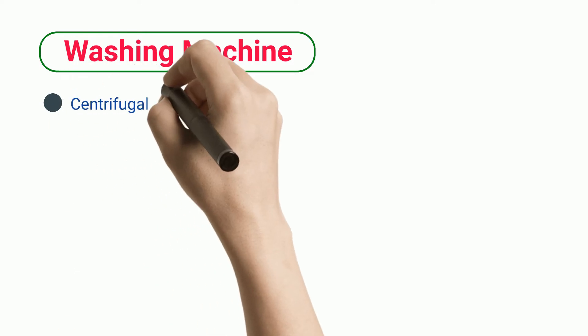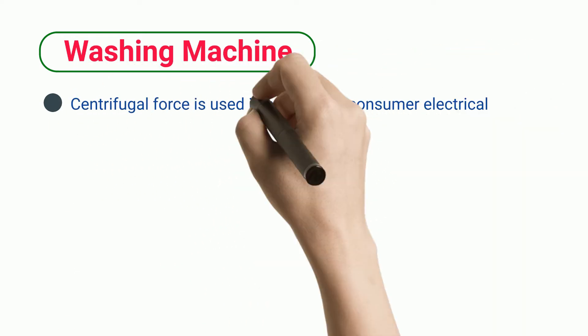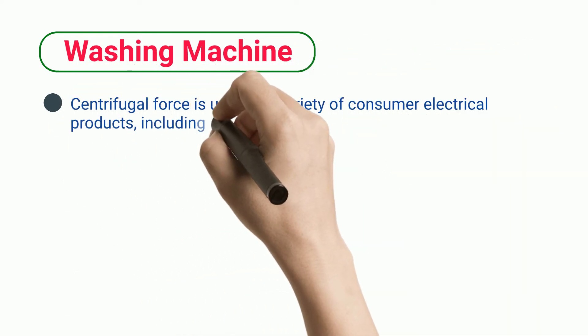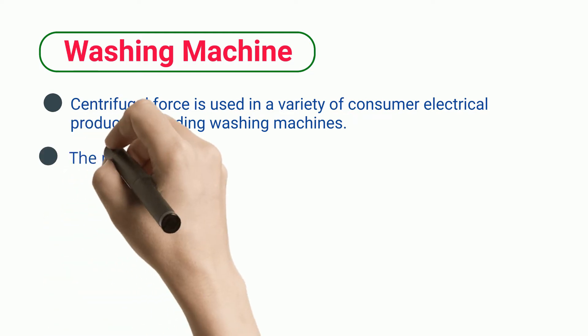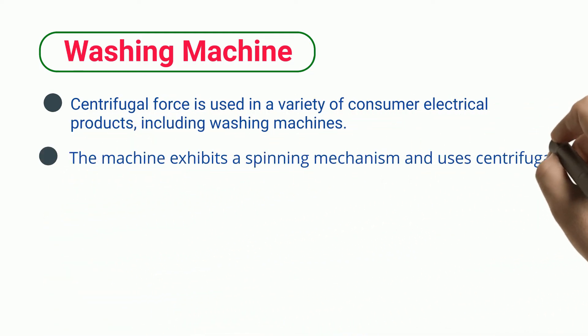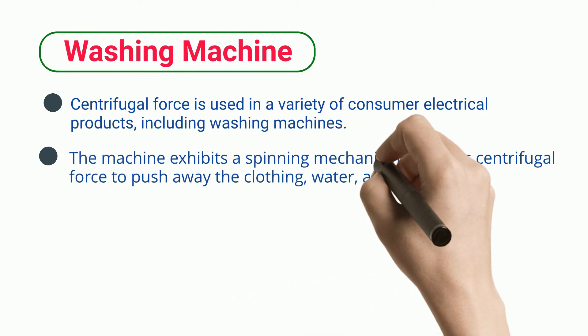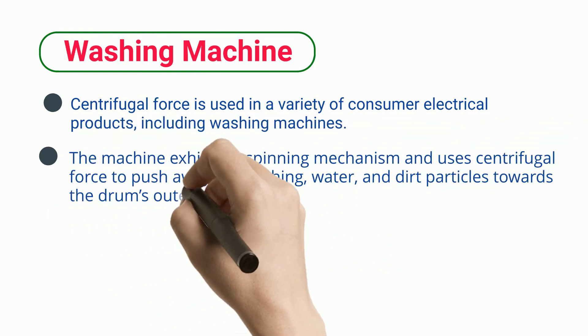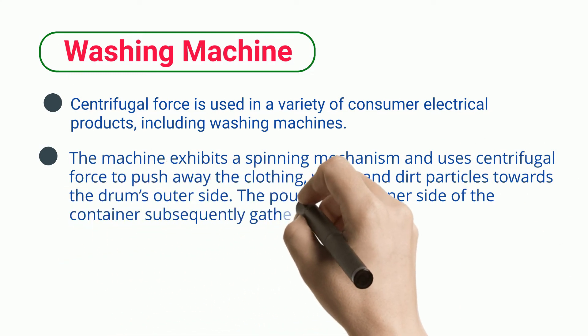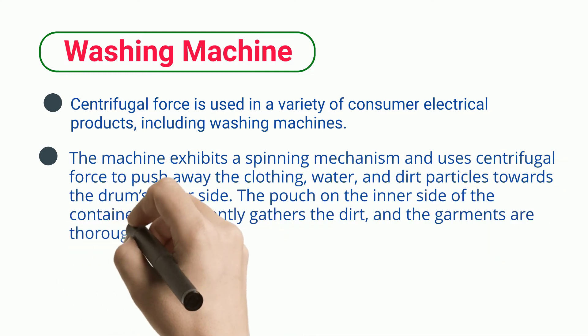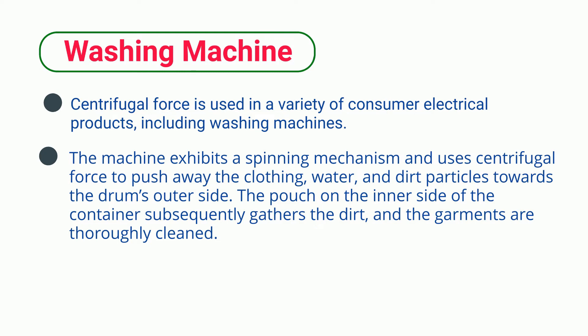Centrifugal force is used in a variety of consumer electrical products, including washing machines. The machine exhibits a spinning mechanism and uses centrifugal force to push away clothing water and dirt particles towards the drum's outer side. The pouch on the inner side of the container subsequently gathers the dirt, and the garments are thoroughly cleaned.